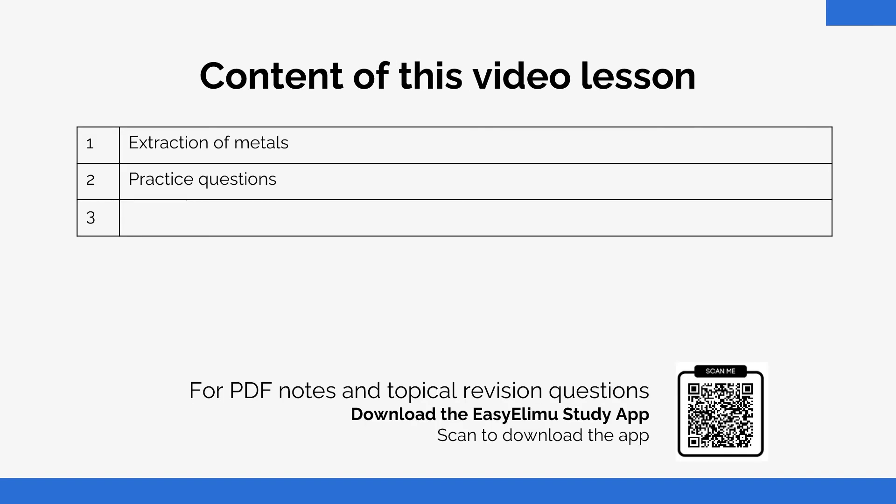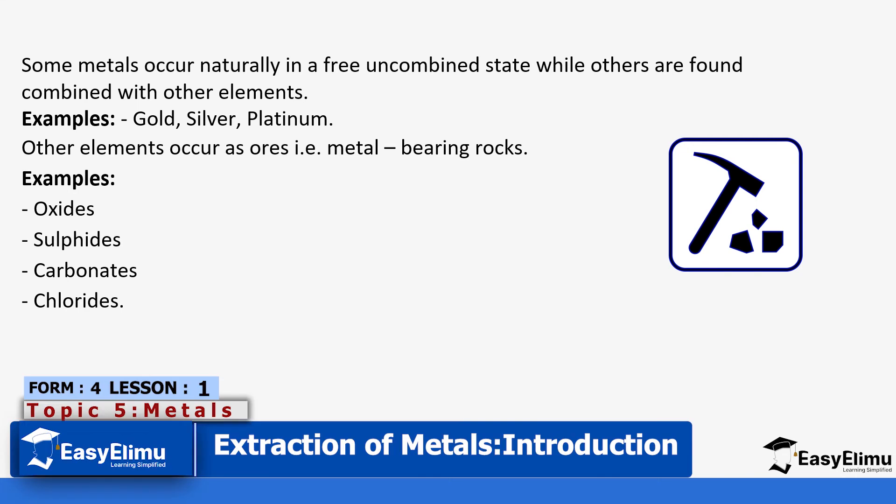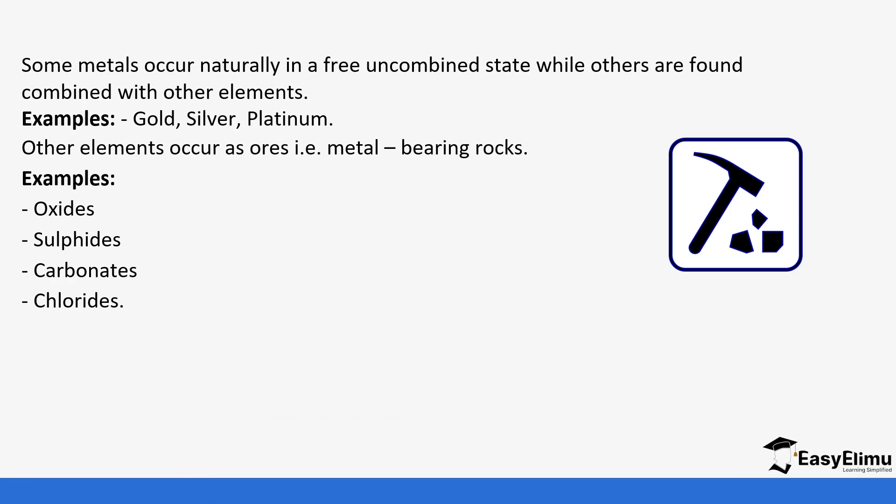Some metals usually occur naturally in a free and combined state, while others are found combined with other elements. The ones found free include gold, silver, and platinum, while the ones combined usually occur in ores. Ores are the metal-bearing rocks, for example oxides, sulfides, carbonates, and chlorides.